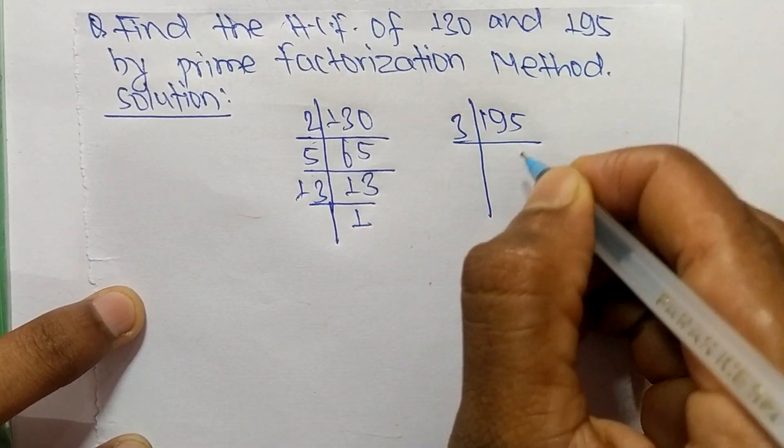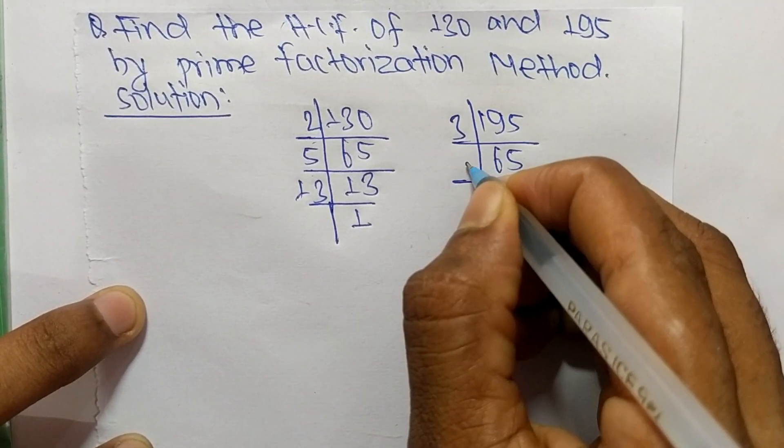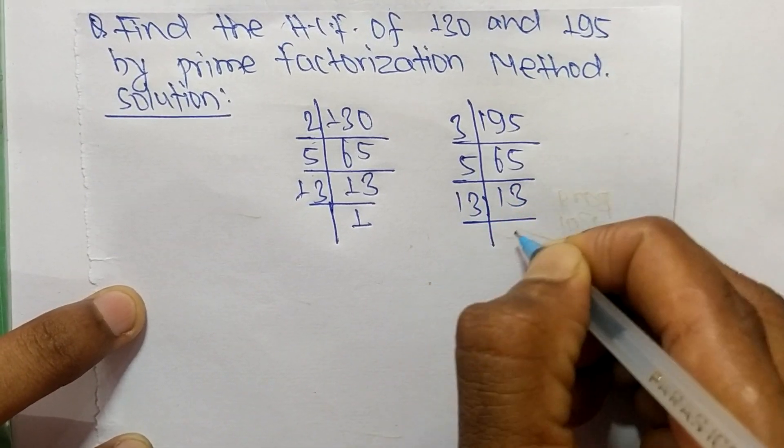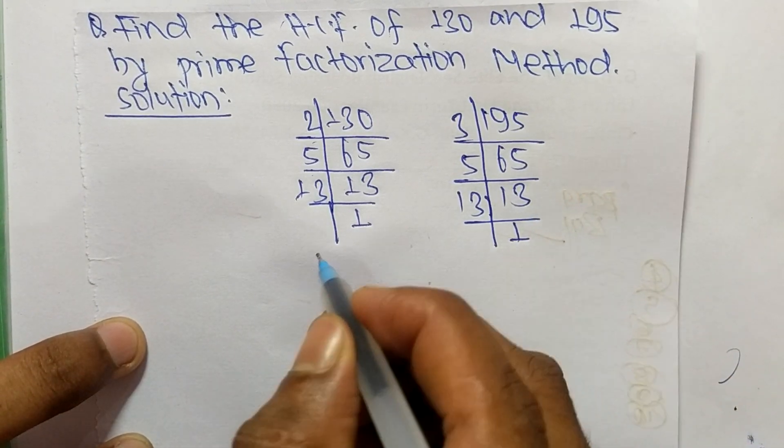It is 3 times 65 equals 195, 5 times 13 equals 65, and 13 times 1 equals 13.